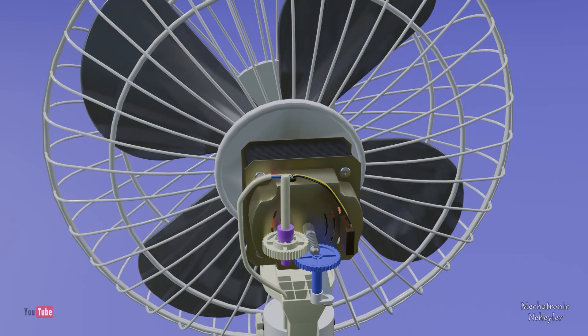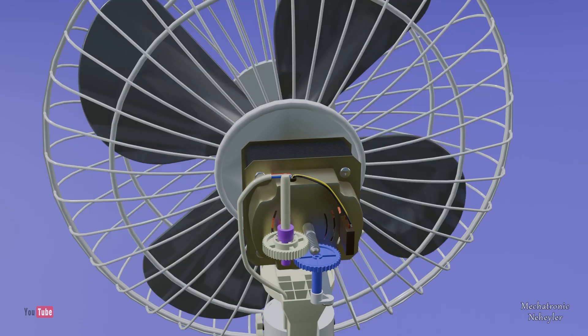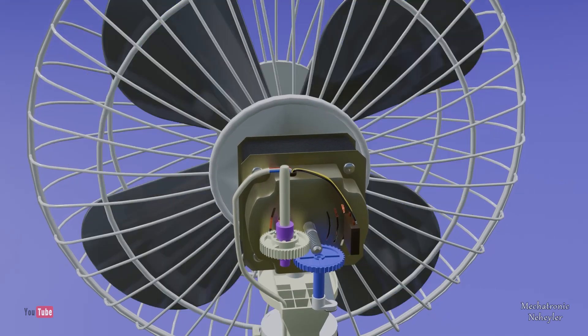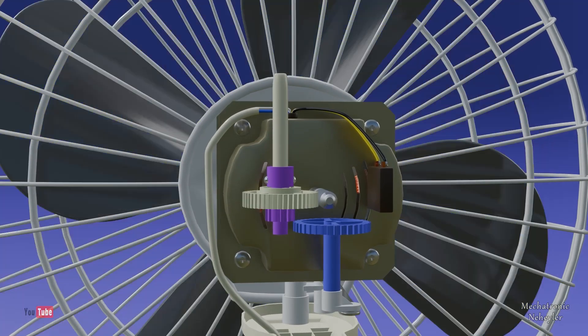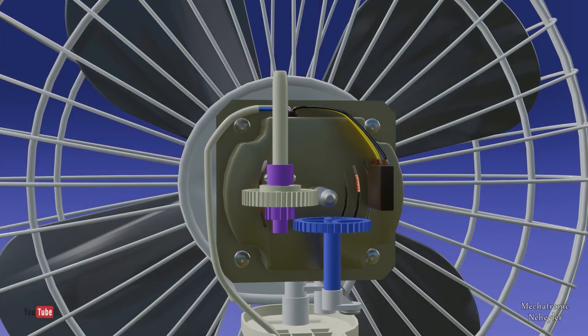The motor shaft extends beyond the rear where at the end it has a worm gear which is coupled to a gear. At the bottom there is another gear that is connected to the crank, which we will detail in a few minutes.